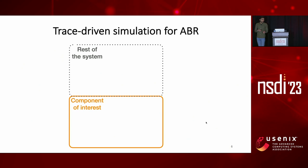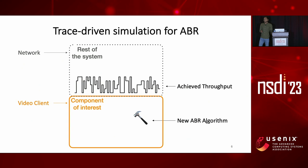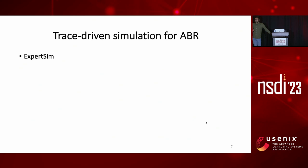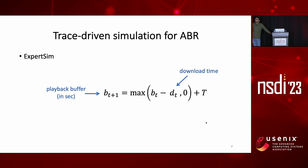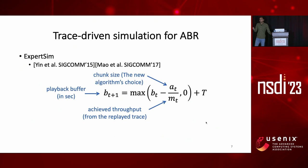Trace-driven simulation has been used many times in this problem, where we simulate the video client and use traces to model the underlying network without simulating it. The intervention that we're interested in is a new ABR algorithm, and a typical trace that we collect from real-world video streaming sessions and replay in simulation time is achieved throughput. To simulate the video client, a common way is to use expert knowledge of the system to model the dynamics of playback buffer level. Buffer level after download of each chunk is buffer level before this download, minus the time it took for the download to happen, plus the amount of video that this newly downloaded chunk adds to the playback buffer. Download time is the chunk size divided by the achieved throughput read off the trace. This simple model has been used in many prior works, such as MPC and Pensieve.